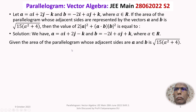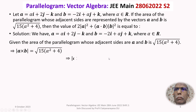The formula for the area of the parallelogram whose adjacent sides are a and b is given by mod of a cross b. So mod of a cross b equals the square root of 15 times (alpha squared plus 4). Squaring both sides, mod of a cross b squared equals 15 times (alpha squared plus 4). Let's call this equation 1.